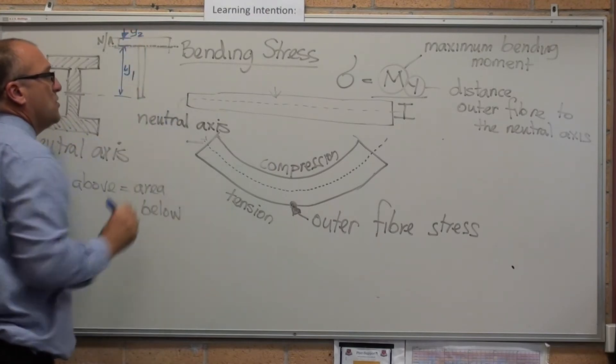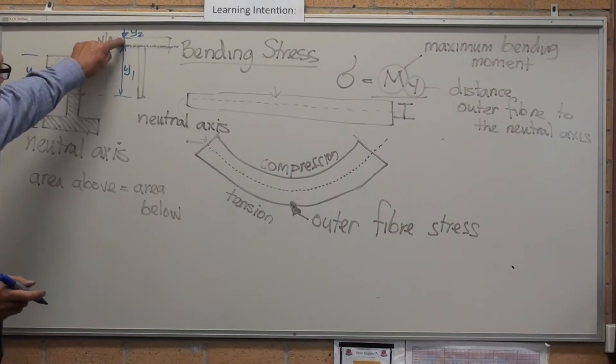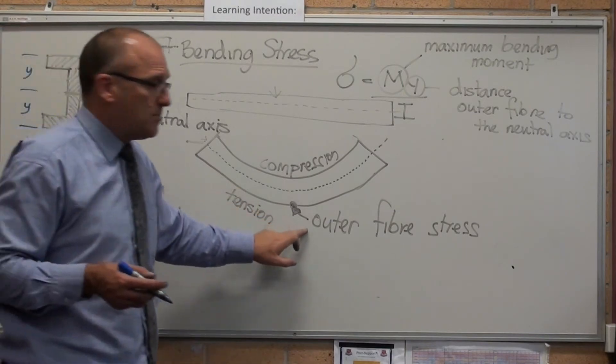On a T-beam, that is the distance to the lower surface and the upper surface it's just that. I'll call it Y1 and Y2. So Y is the distance from the neutral axis to the outer fiber or the point at which you're measuring stress. We're measuring outer fiber stress.